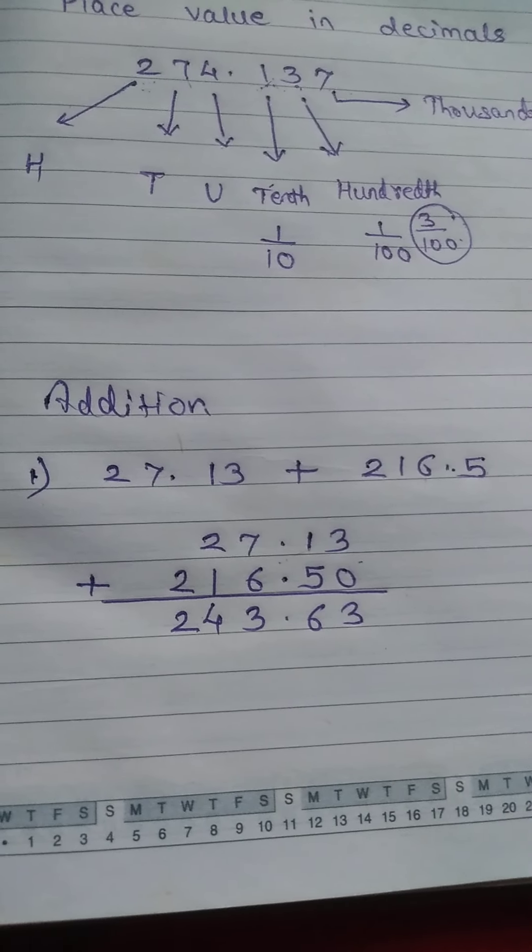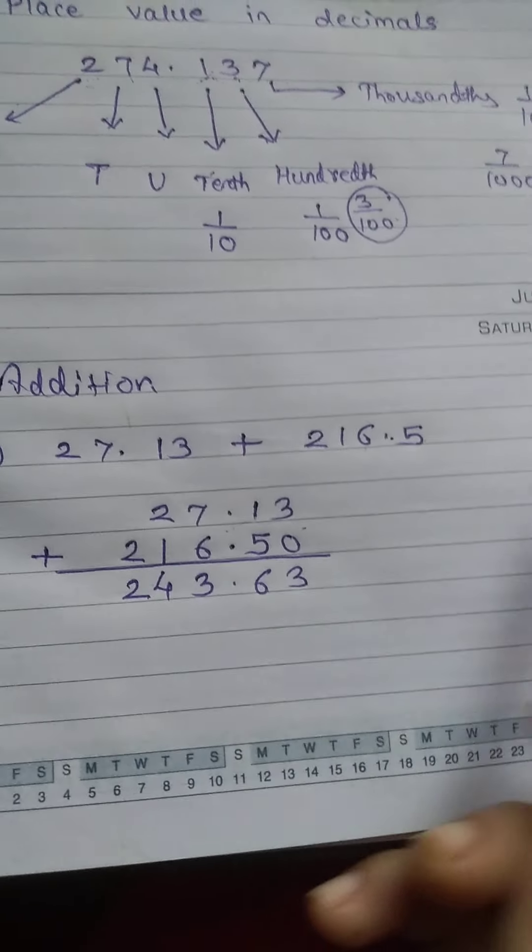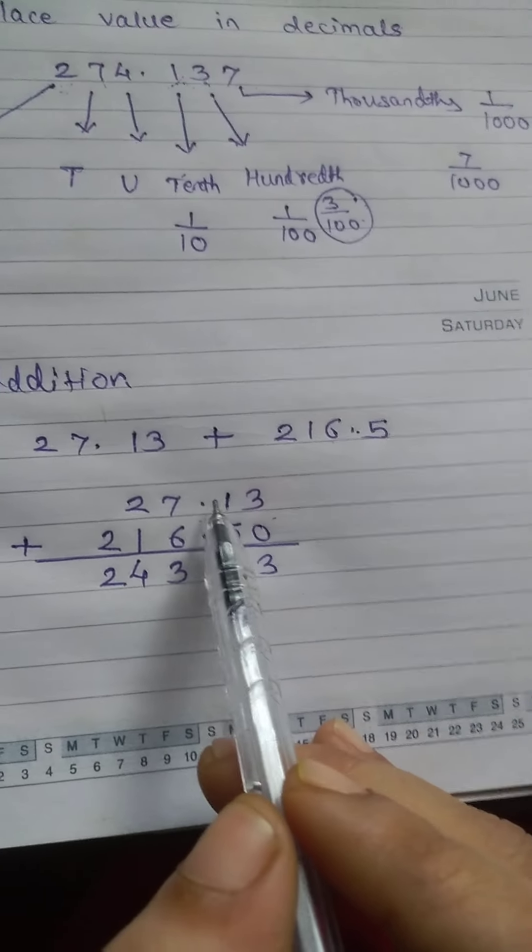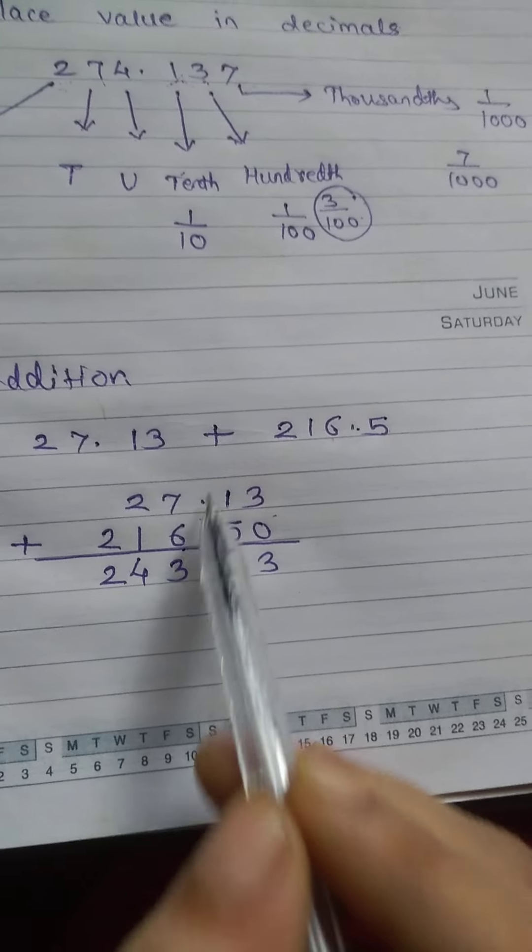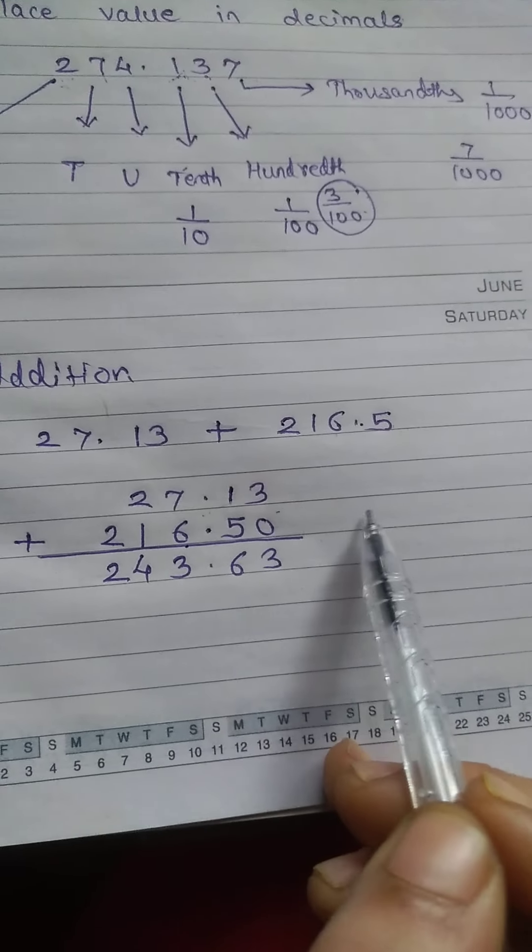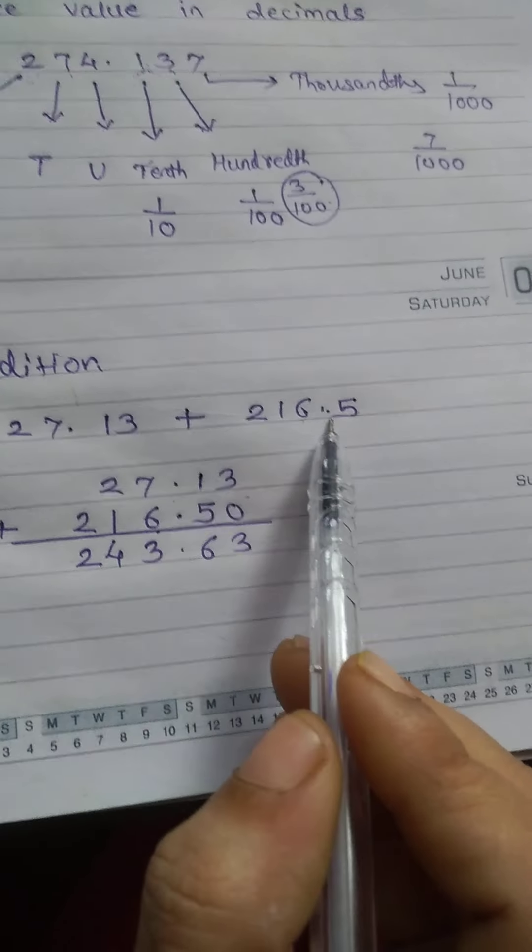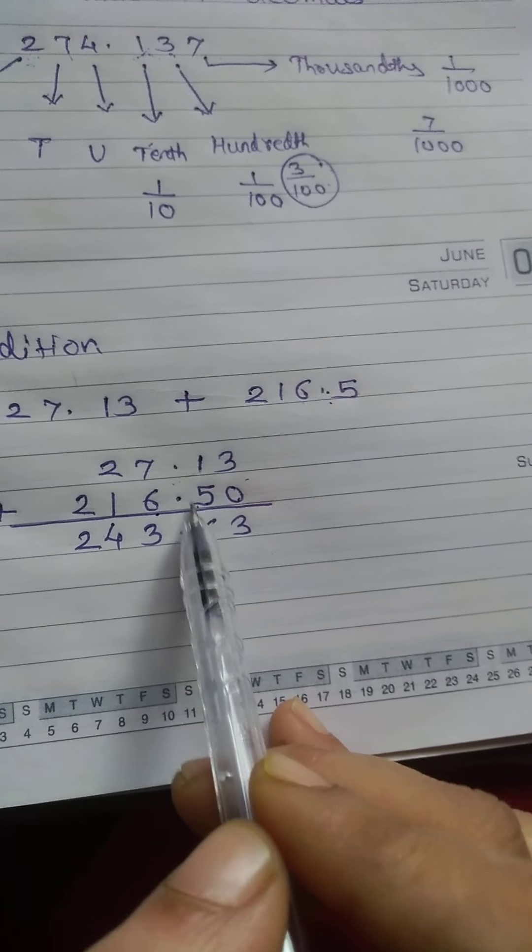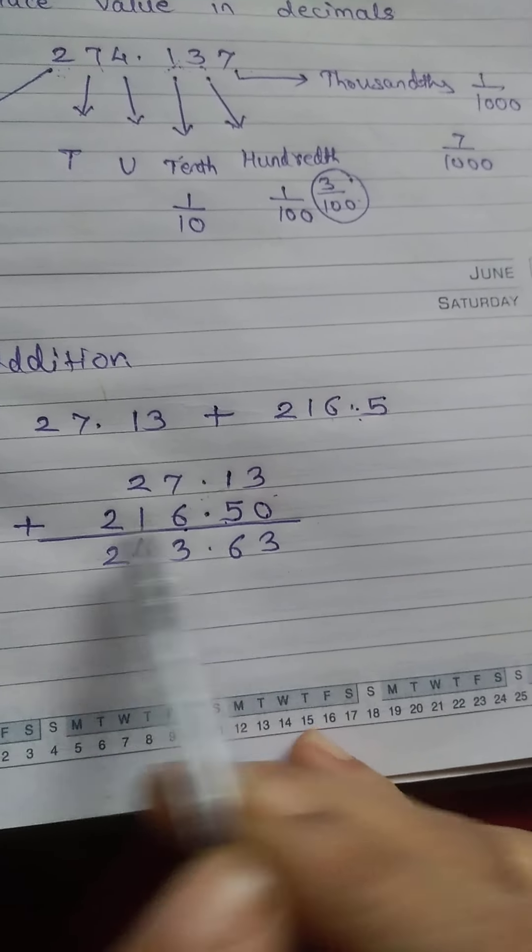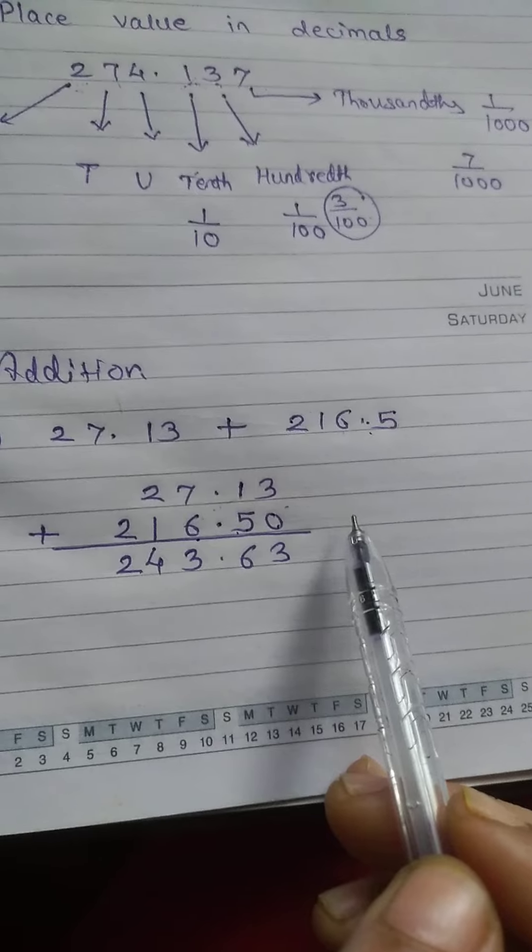Very easy method. If three numbers are given, then what you have to do? Point should come one below the other, then you can arrange the numbers. Now this is 5, so I cannot write 5 over here and point here. No - point one below the other, and afterwards numbers you have to arrange.